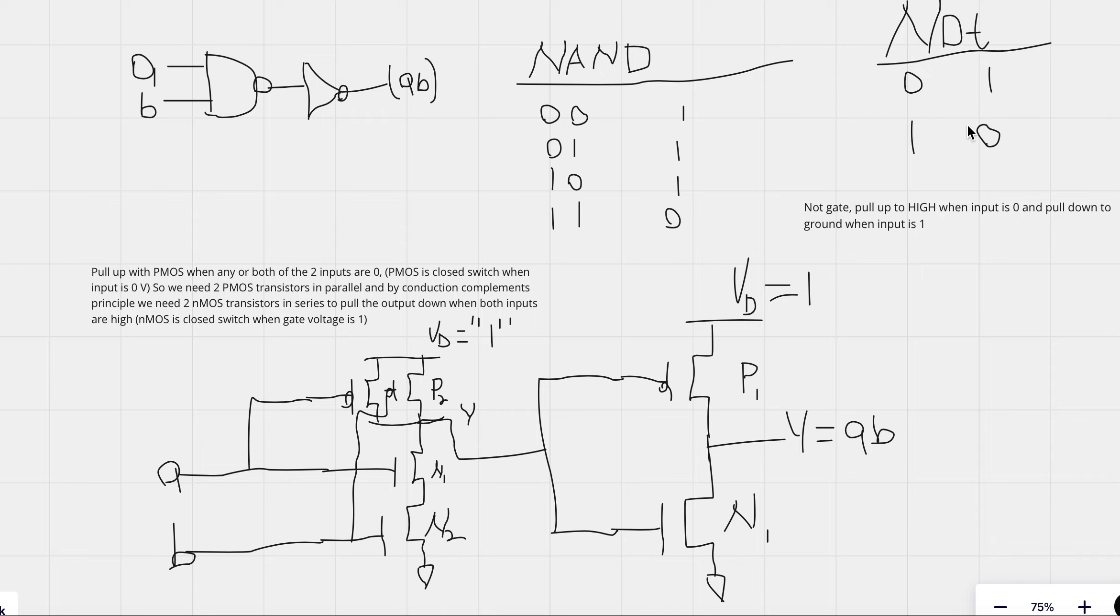So we use PMOS transistors to pull up a voltage to high because they are better at passing 1s, and NMOS transistors are better at passing 0s, so we use them to pull down an output voltage to ground.